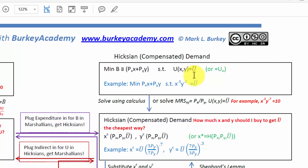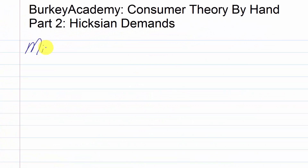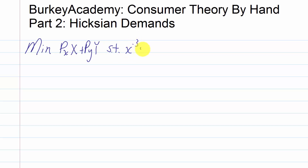This viewer wants me to go through by hand how to derive these compensated demand functions, and I'm happy to do so. If anybody has other requests to see something done the long way by hand, just send me a message. What we want to do is minimize the budget. I'll write the budget line equation here: price of x times x plus price of y times y, subject to the constraint that x to the 0.3 times y to the 0.7 equals some fixed level of utility, u-bar or u-naught.